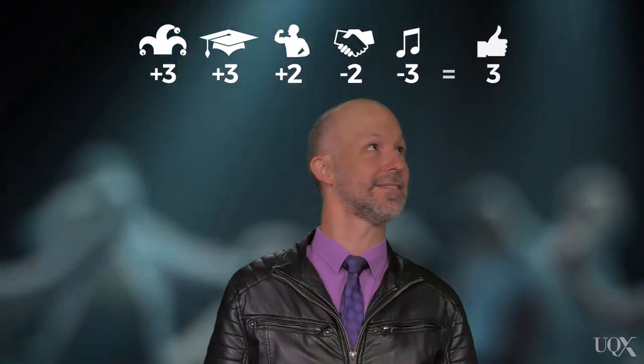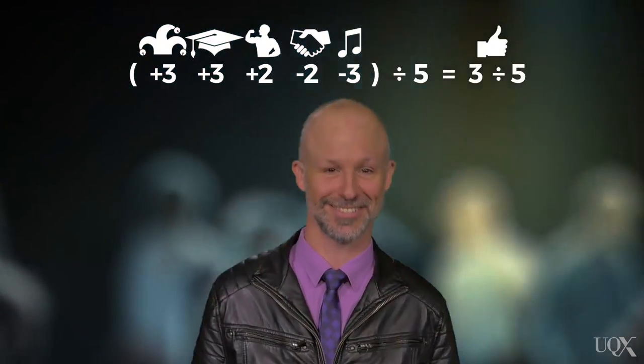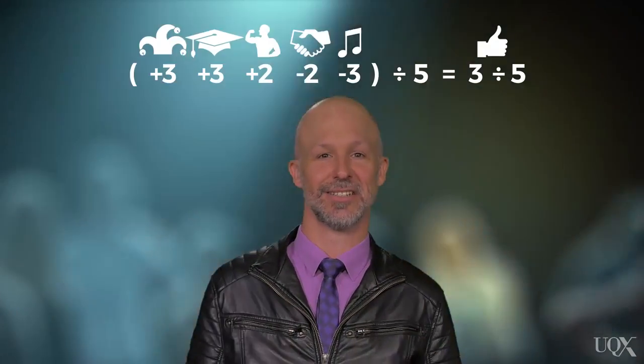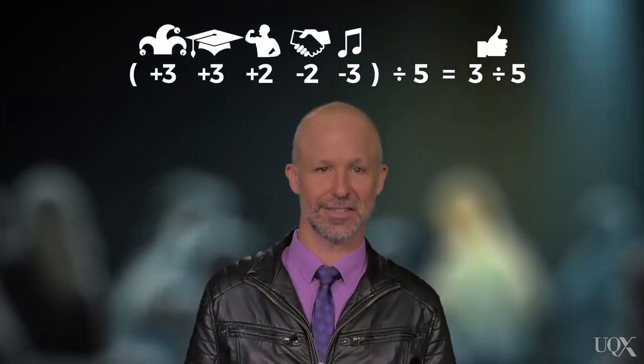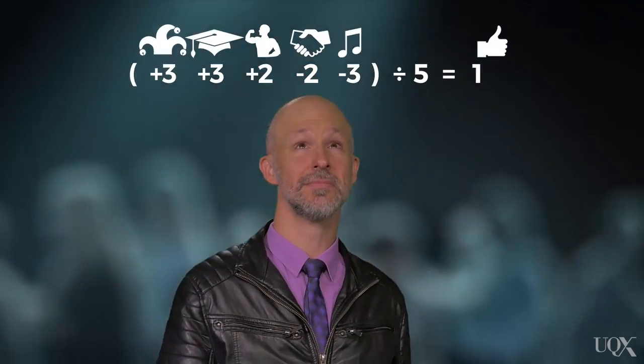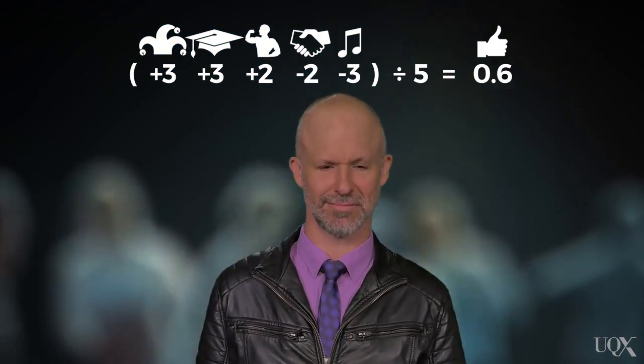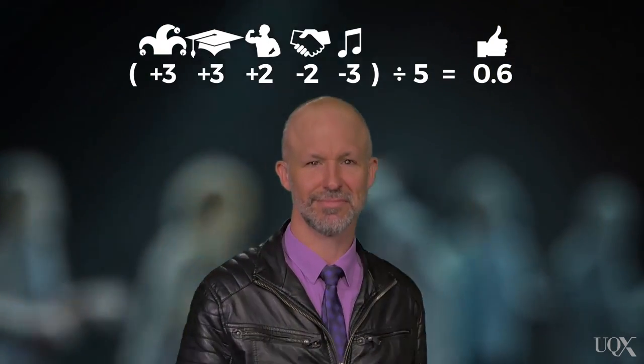According to Anderson's averaging model of impression formation, we could also arrive at an overall impression of Bob by averaging our likeability ratings. We take the overall sum of the ratings and divide by the number of ratings — so we take 3 and divide by 5, as we know 5 attributes about Bob. This gives us an impression of 0.6 for Bob. It's still a positive impression, so we must still like Bob.